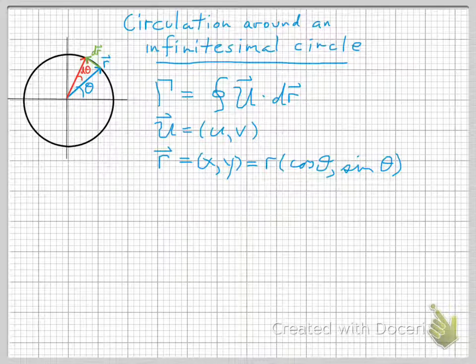So after we've moved by this little increment, then the new position vector is r evaluated at theta plus d theta. And the red vector minus the blue vector is the little green vector. So let's go ahead and write out an expression for what dr is.